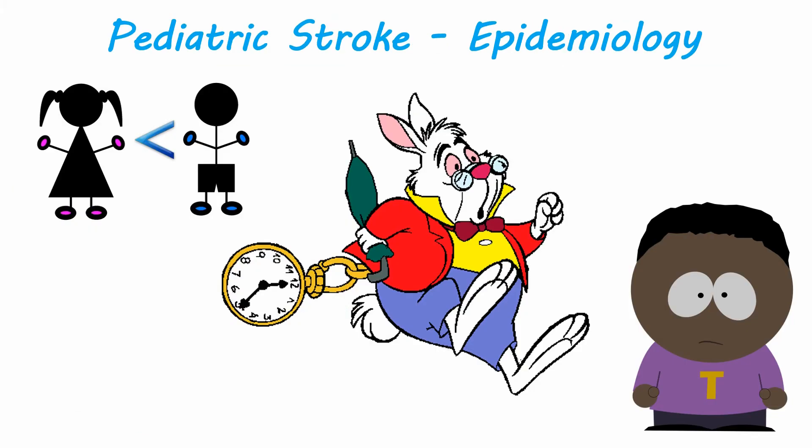For epidemiology, it's rare overall with a combined incidence of 1.2 to 13 cases per 100,000. It's probably underdiagnosed and misdiagnosed due to a low level of suspicion and frequent mimicry of other diseases. The reported incidence has more than doubled in the past decade, and we see it more often in boys and Black children even when accounting for sickle cell disease.